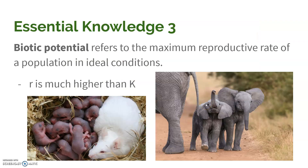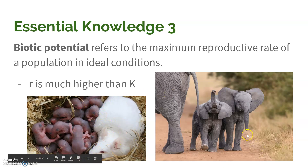Biotic potential is the maximum reproductive rate of a population in ideal conditions — so as many babies as they possibly can. R-selected species have a much higher biotic potential than K-selected species, because they can have a lot more offspring than elephants can.